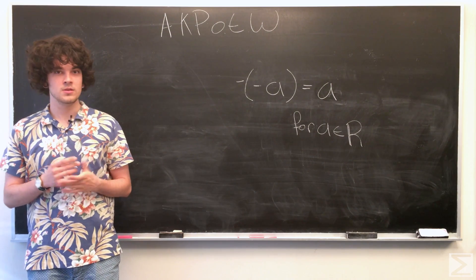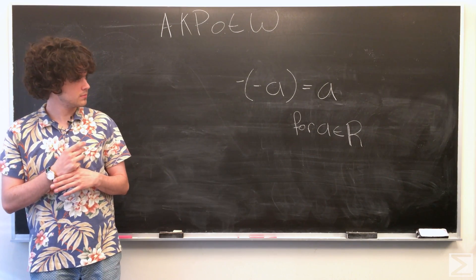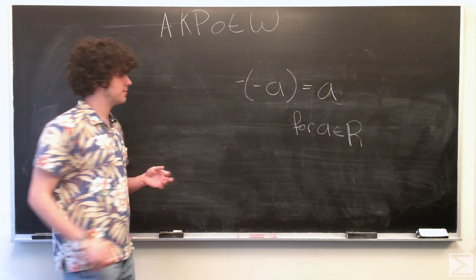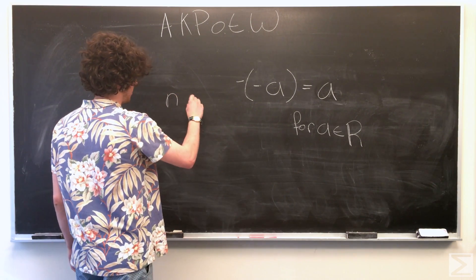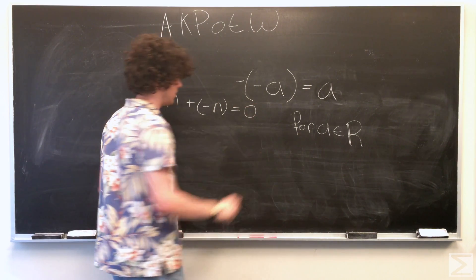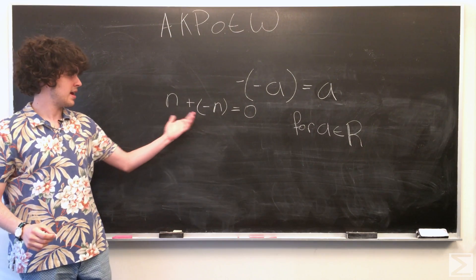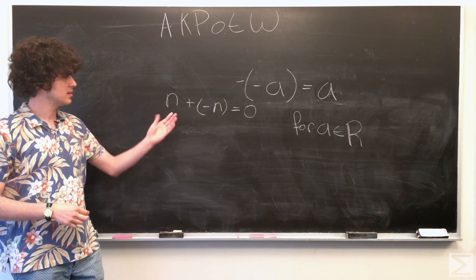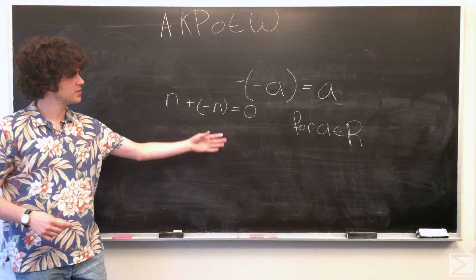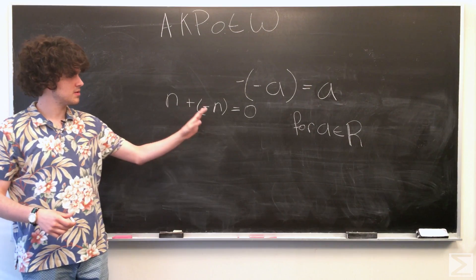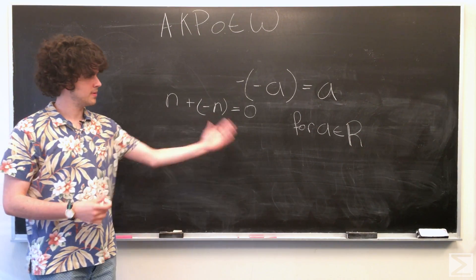So the way we're going to do this is, well, we know that for any number there exists its additive inverse, so that we get n plus the additive inverse of n is equal to 0, which is just negative n if we're in the real numbers.